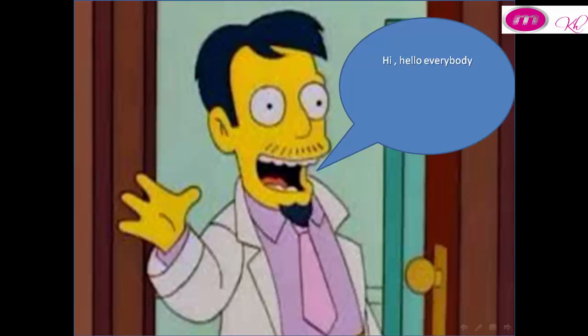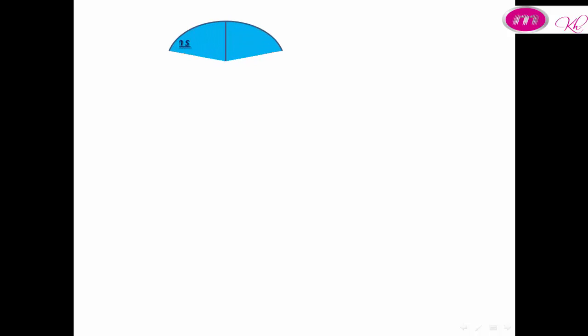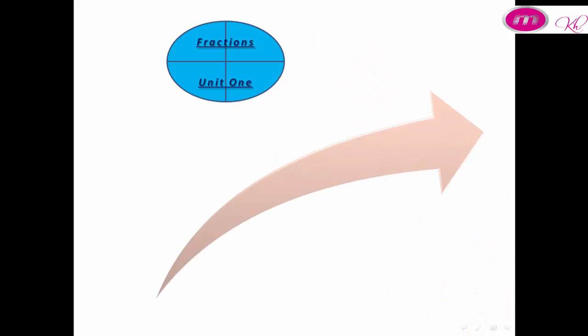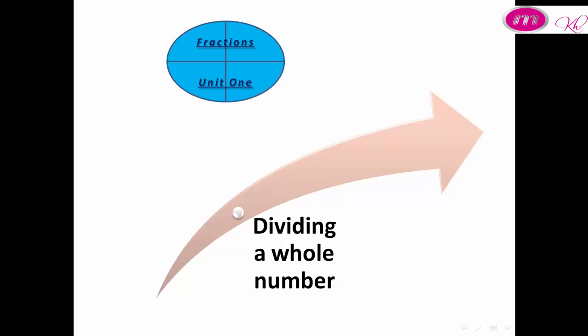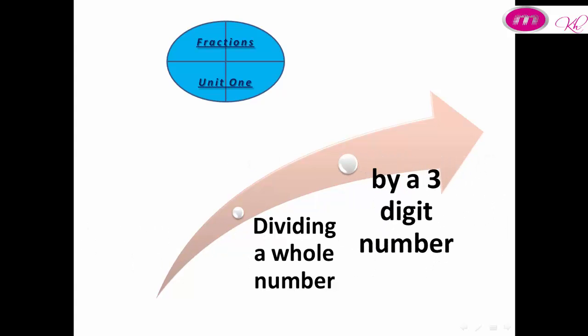Hello everybody, today we take a new lesson in Unit 1: Fractions — dividing a whole number by three digits. How to divide: 99,864 divided by 292.